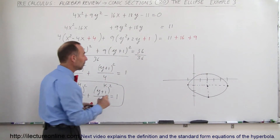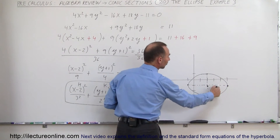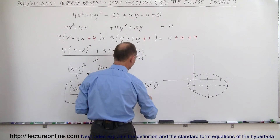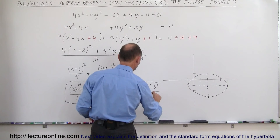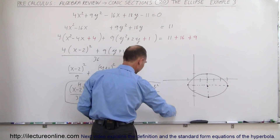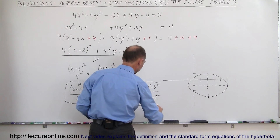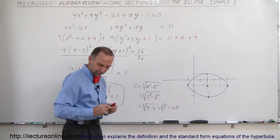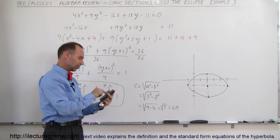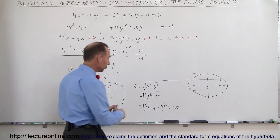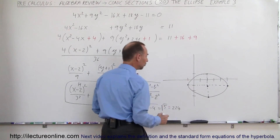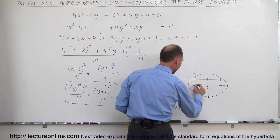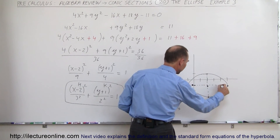Now, what about the foci? Remember that the foci are at the center plus or minus C, where C equals the square root of A squared minus B squared. In this case, that's the square root of 3 squared minus 2 squared, which is the square root of 9 minus 4, equal to the square root of 5, which is approximately 2.24. So C is located about 2.24 units to either side of the center along the major axis.